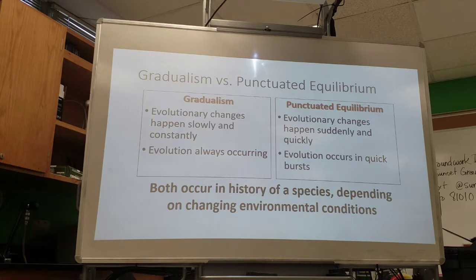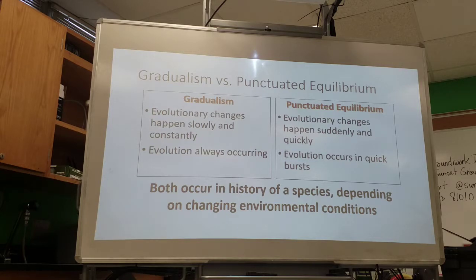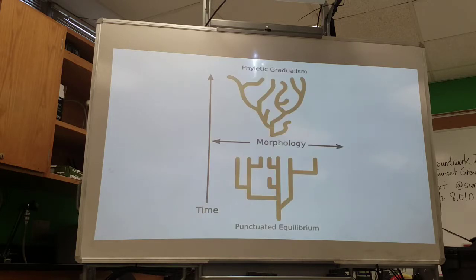Evolution can happen at different speeds. With gradualism, evolution occurs very slowly, building up small changes constantly. With punctuated equilibrium, a species stays the same for a while and then undergoes a rapid, semi-dramatic change. Both can happen over the course of a species' evolution, depending on how the environment changes. Gradualism shows gradual continuous changes, while punctuated equilibrium looks like: same, same, same — then a dramatic shift.